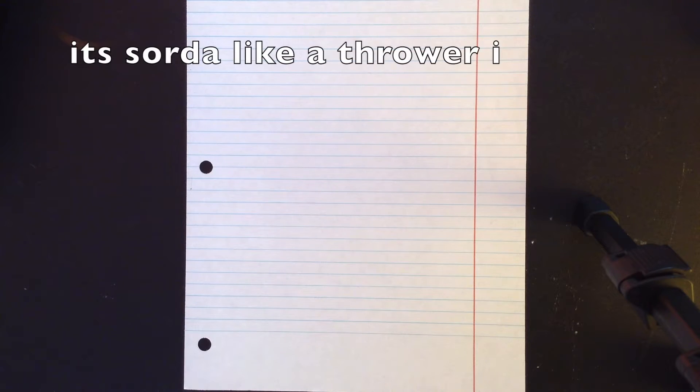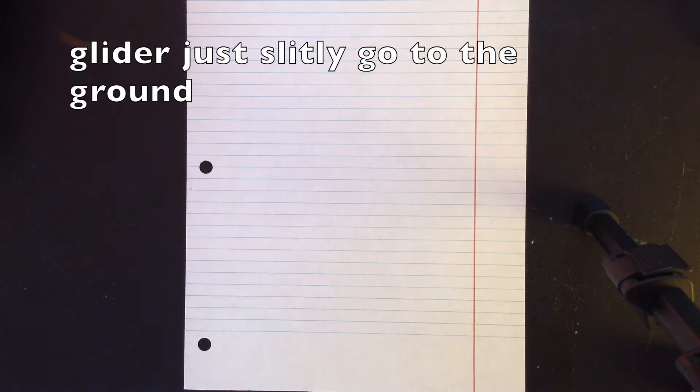In today's episode, we're going to be doing a cool, not a glider, because it doesn't really glide. It's sort of like a thrower, I guess. Gliders just slightly go to the ground. This one does not. So yeah, it will have a tail too, which is cool.